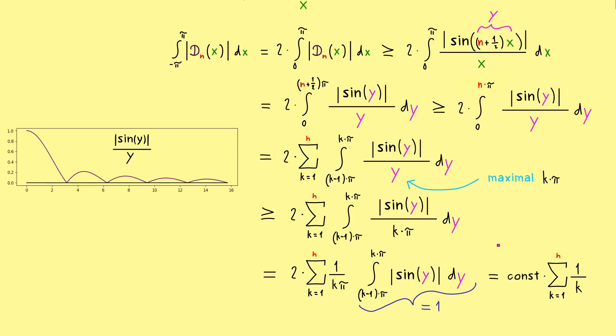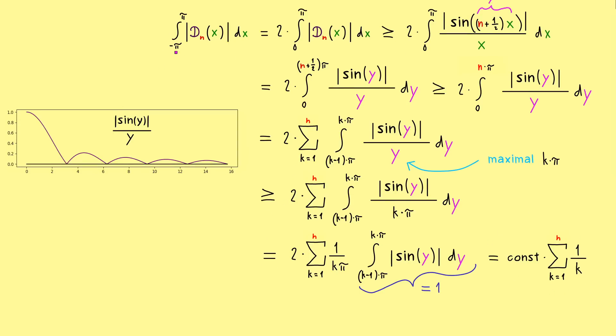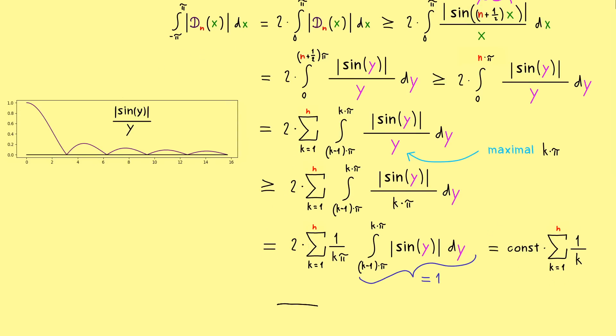And that's it, this finishes the proof. So we see in the limit n to infinity, this Dirichlet kernel is not simple at all. And this also explains why the whole Fourier series theory is not so simple.